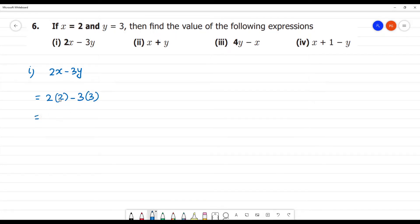So, what is this? 2 into 2 is 4, minus 3 into 3 is 9. So, 4 minus 9 is minus 5. The answer is minus 5.